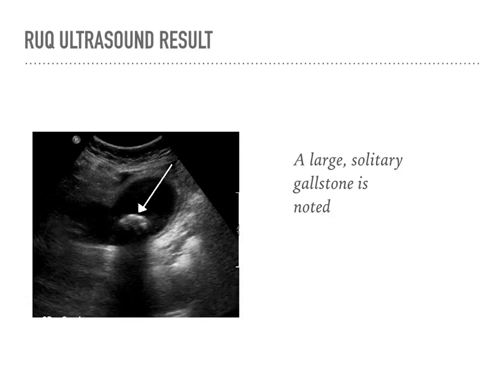Reviewing the case, you think of cholecystitis especially with a positive Murphy's sign, but also consider renal stones or pancreatitis. When you order an ultrasound of the right upper quadrant, you can clearly see a large stone in the gallbladder. Other studies to consider include a CBC with differential, complete metabolic profile, amylase/lipase, and UA. If the abdominal ultrasound were negative, you may want to consider a CT scan or HIDA scan.